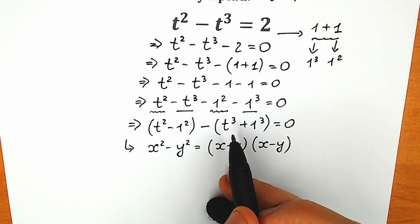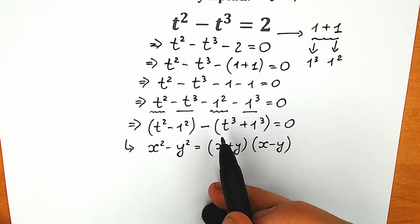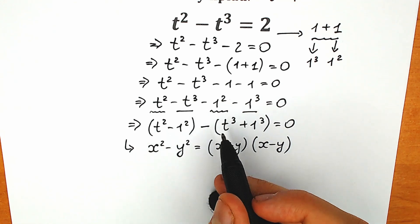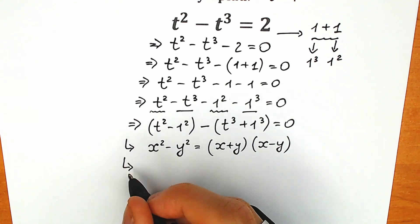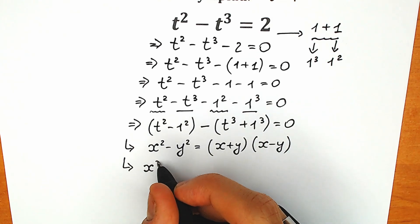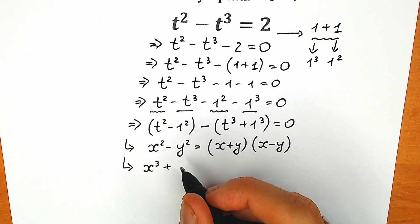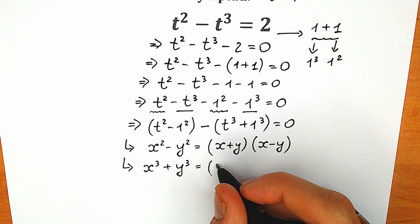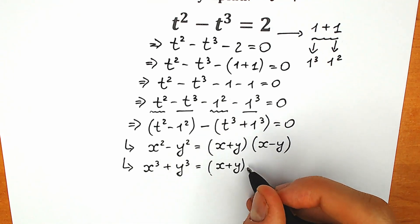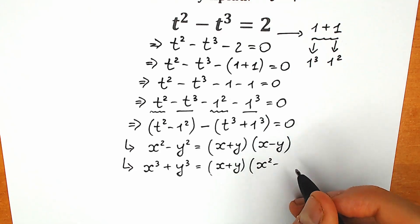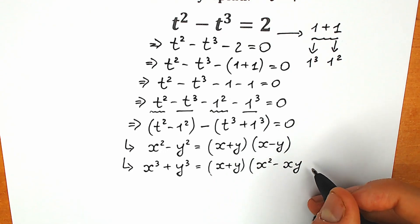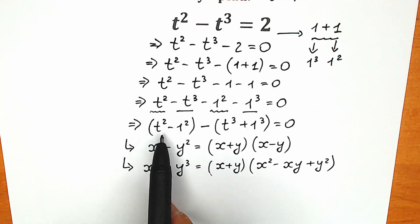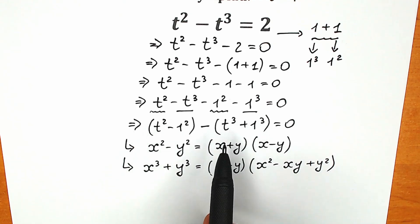Now the second parenthesis — this may be a little bit more complicated, because it's not the classic one. This is the sum of two cubes formula, maybe the most popular one. x cubed plus y cubed equals x plus y, times the quantity x squared minus xy plus y squared. Now let's apply difference of squares here and sum of two cubes to the other part.